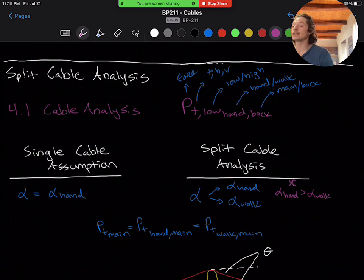Differences just appear when we look into the backstay. So in the basic course, we take PT back as what we'll now be calling PT hand back, because we are using the worst case alpha of the handrail cable.